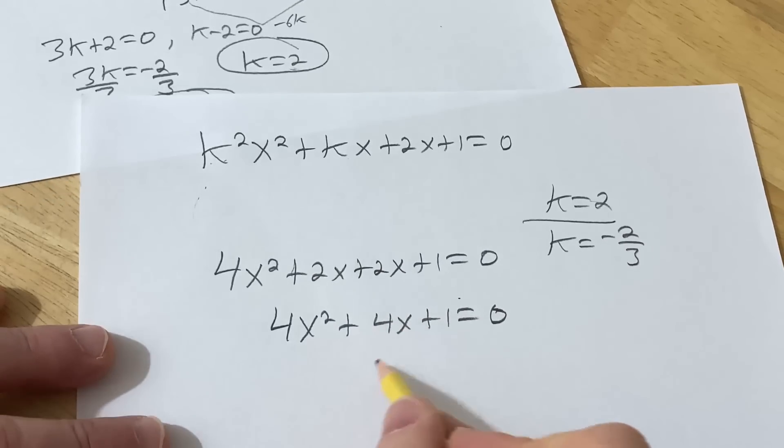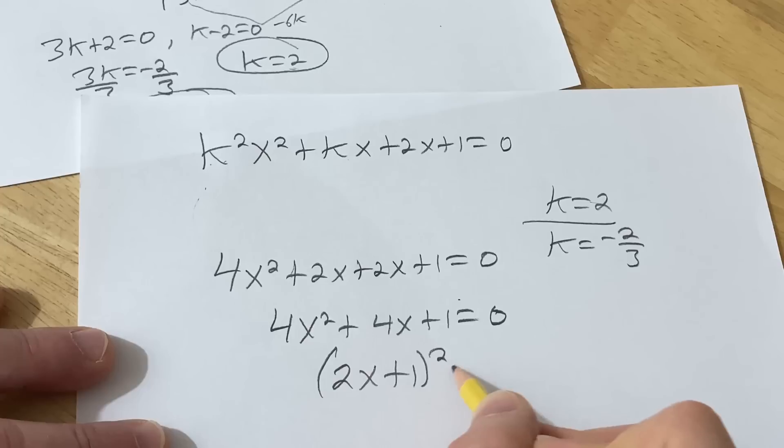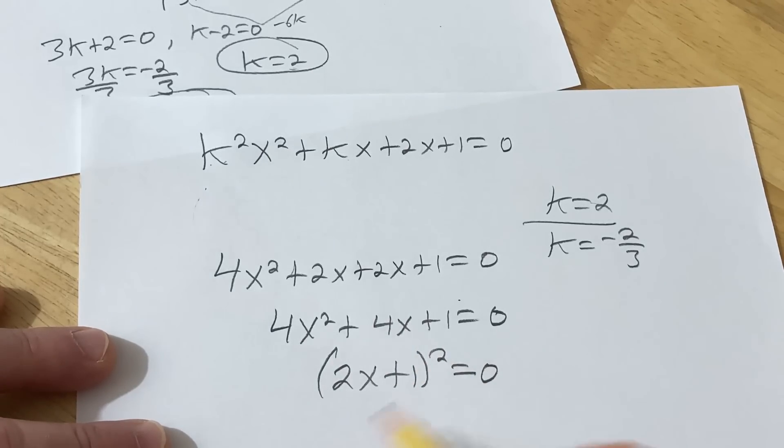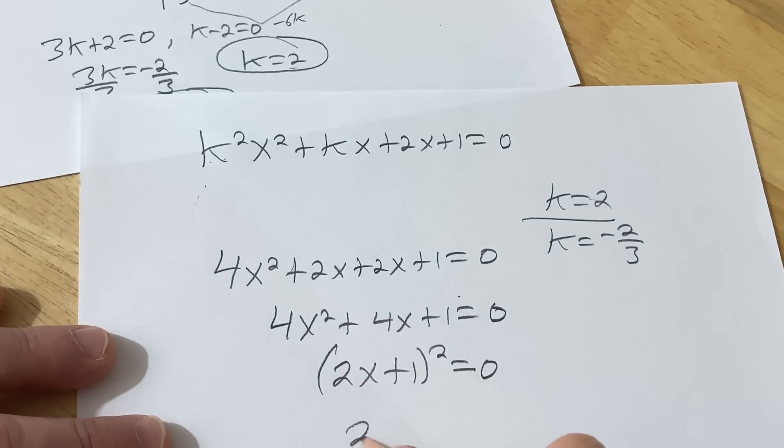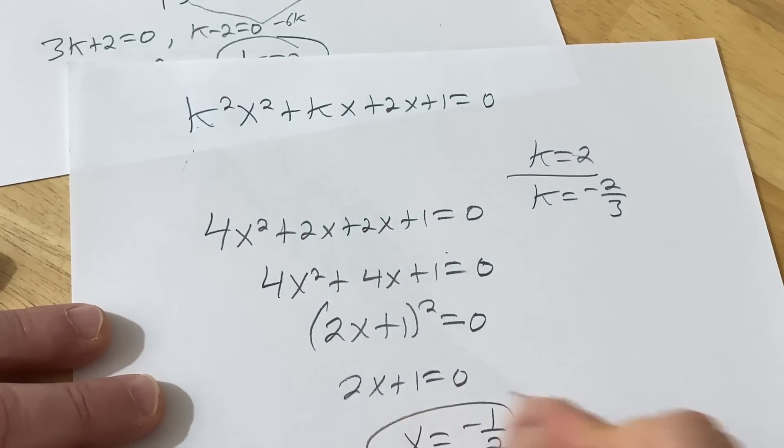So this is going to be 4x squared plus 4x plus 1 equals 0. Yeah, this is called a perfect square trinomial because I believe this is 2x plus 1 squared equals 0. Beautiful. So that's going to give us equal roots.